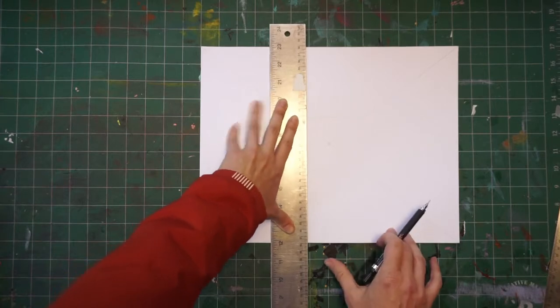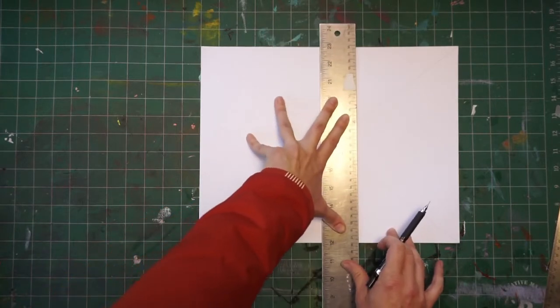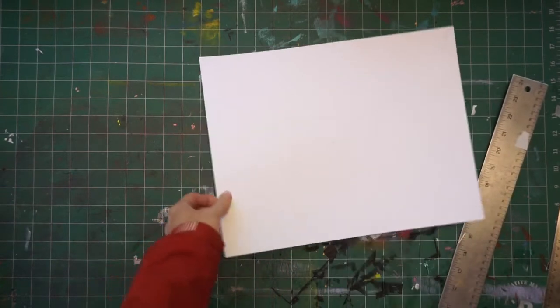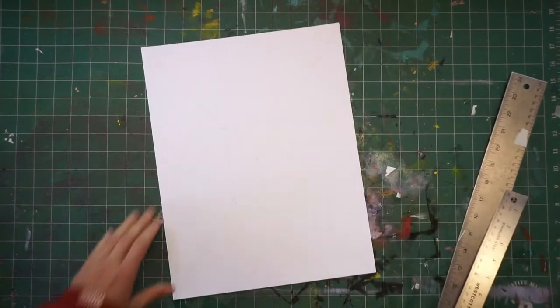Keep my paper in place, lined with the edge of the grid on the cutting mat, and lay in my line. Now I have a 3 by 4 inch rectangle. I'm good to go.